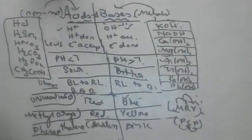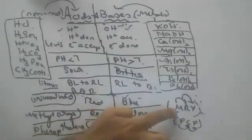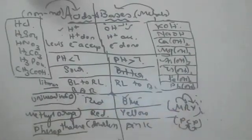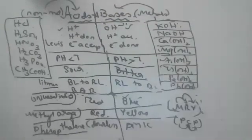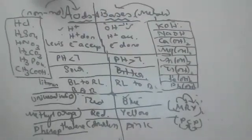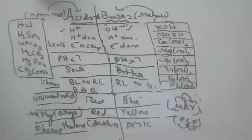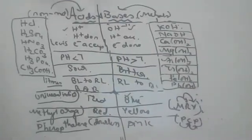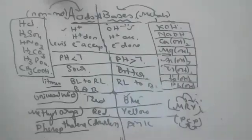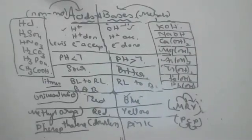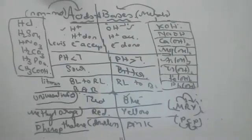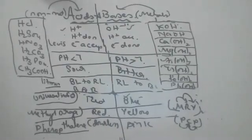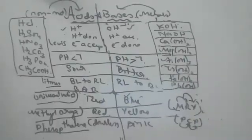Remember the abbreviations: MRY — methyl orange, red in acids, yellow in bases. PCP — phenolphthalein, colorless in acids, pink in bases. An indicator is a substance which shows different colors in acids and bases. We will learn indicators as a separate topic because they are very important.